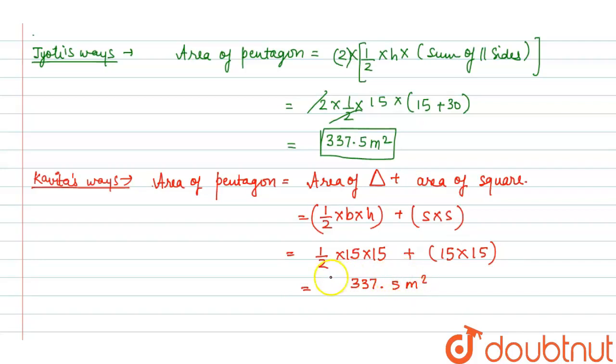So we can say that we can say that in both methods, the area of pentagon park are same. Now it is asking, can we find its area by another method?